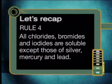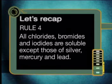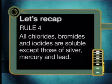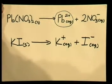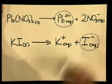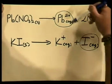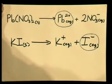Any precipitate must be formed from a combination of these ions. Do you remember the solubility rules for lead ions and iodide ions? Rule number four says all chlorides, bromides and iodides are soluble except those of silver, mercury and lead — so lead iodide is therefore insoluble. When lead cations are attracted to the iodide anions, they join together to form a new insoluble substance called lead iodide.